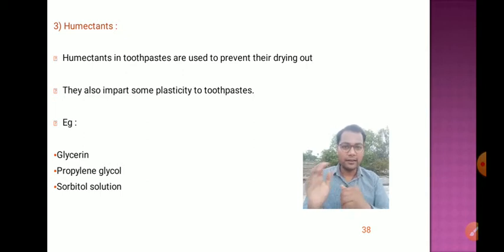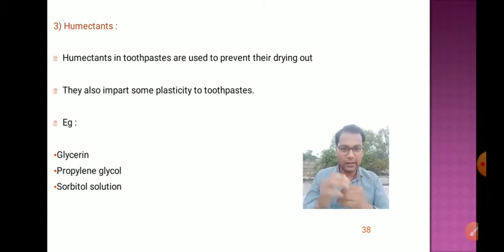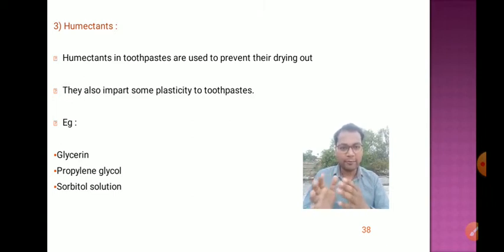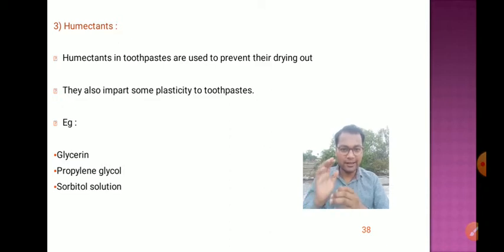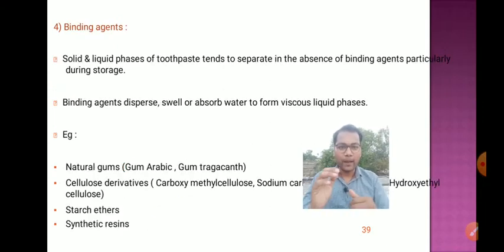Another ingredient is humectants. Humectants are used to keep moisture in the formulation — they prevent the toothpaste from drying out, keep it in a moist state, and also impart some plasticity. Examples of humectants are glycerine, propylene glycol, and sorbitol solution.